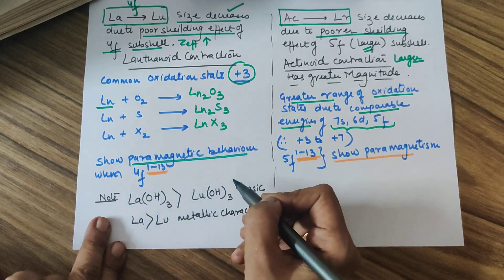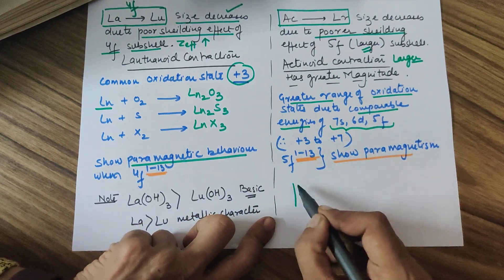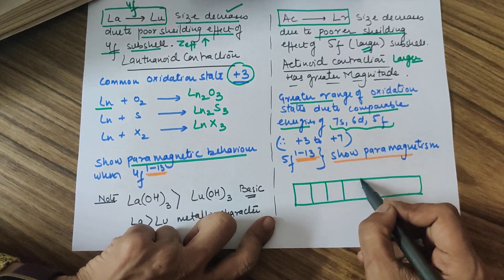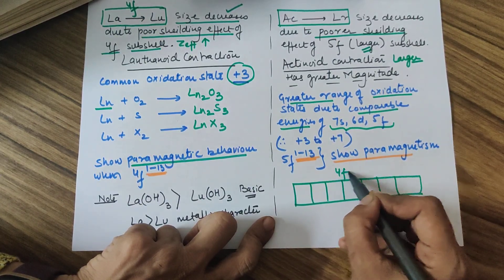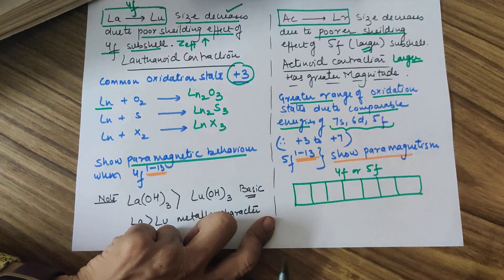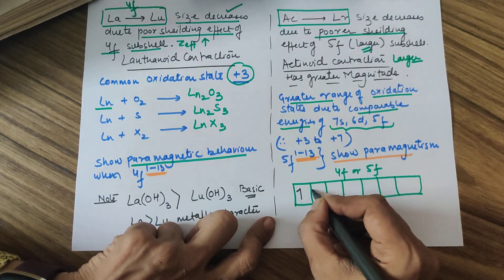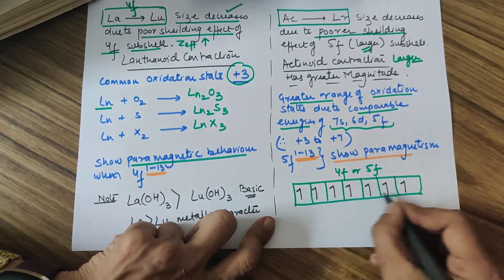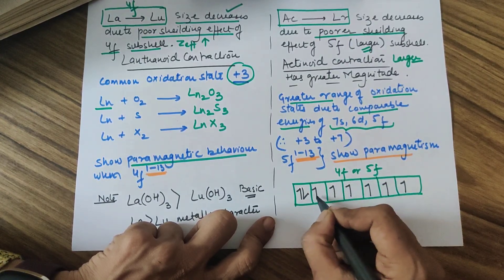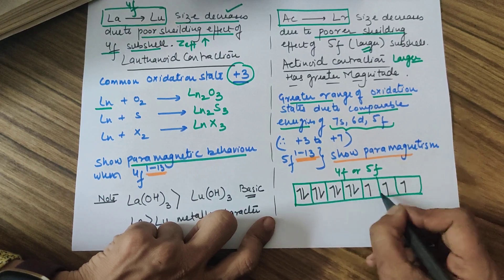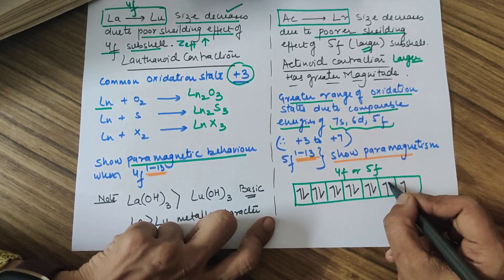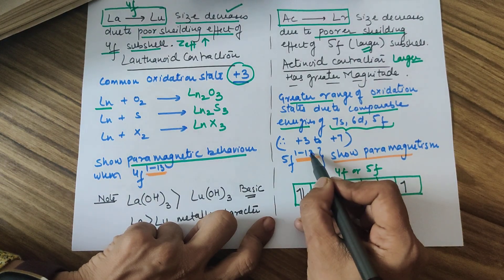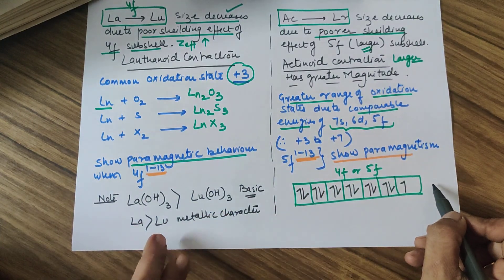Whenever f-orbitals are partially filled (4f¹⁻¹³ or 5f¹⁻¹³), the element shows paramagnetic character due to unpaired electrons. The f subshell has seven orbitals. With 1 to 13 electrons in 4f or 5f, there will always be unpaired electrons, so these elements are paramagnetic.